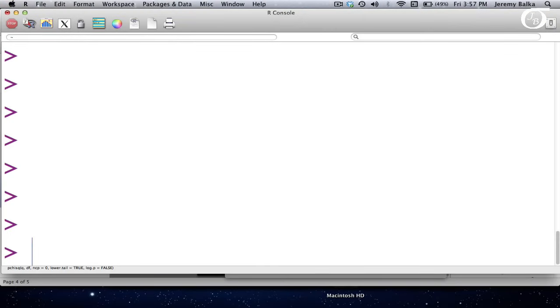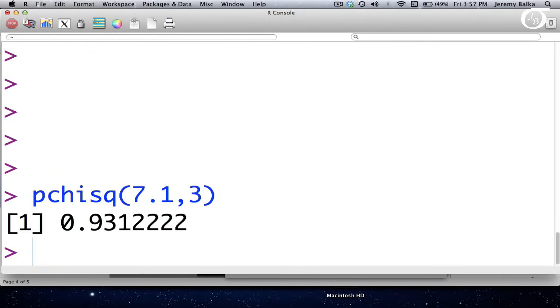Here's the statistical computing package R. And here the command pchisq gives me the area to the left of the value I put in. So if I put in pchisq 7.1 with 3 degrees of freedom, then we get the value 0.931222. But we don't want the area to the left. We want the area to the right.